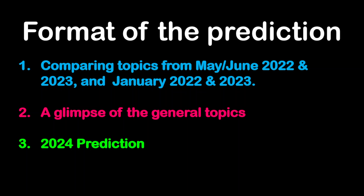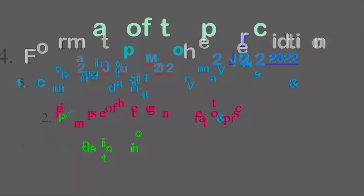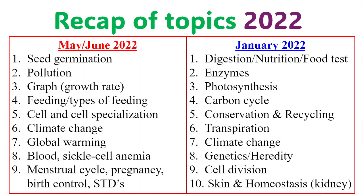The format of this prediction will be as follows. We're going to compare topics from May/June 2022 and also May/June 2023, as well as January 2022 and January 2023 examinations. Next, we're going to look at the general topics — a glimpse of the general topics as they relate to the syllabus. And then we jump into the 2024 prediction. Again, this is my prediction and is not an absolute guarantee, but it is a likelihood. So we're going to take a journey through the past examinations, 2022 and 2023, starting with May/June 2022.